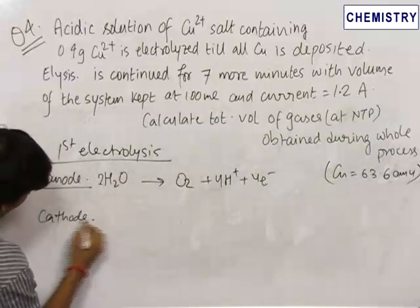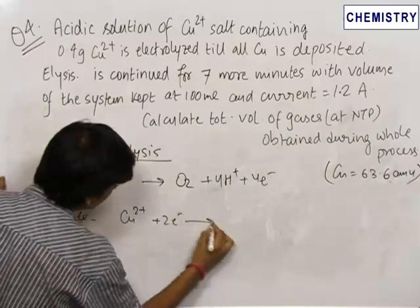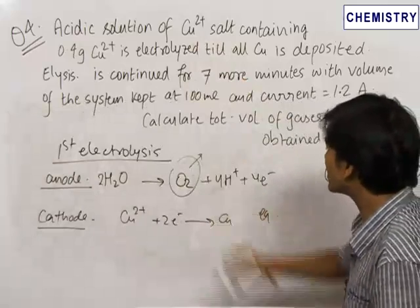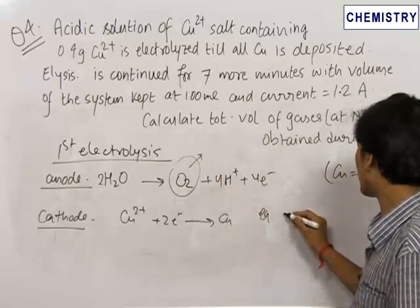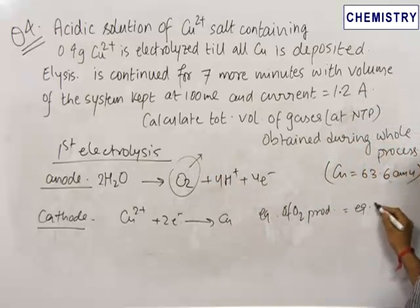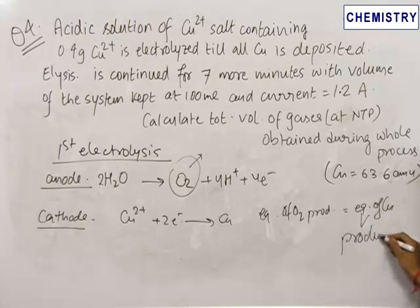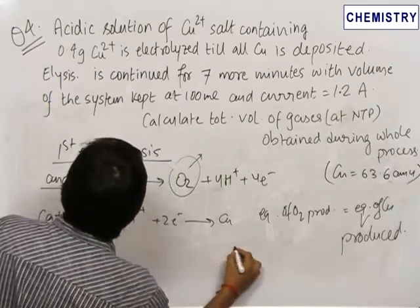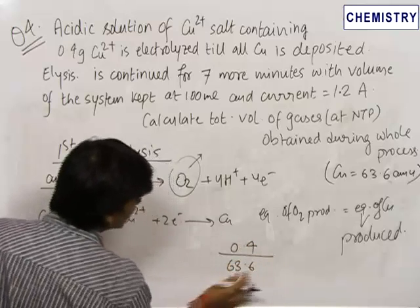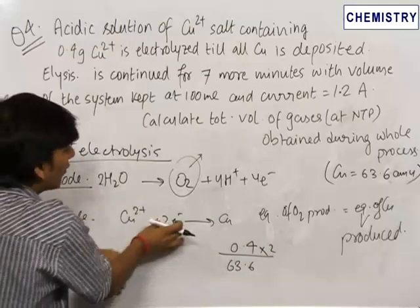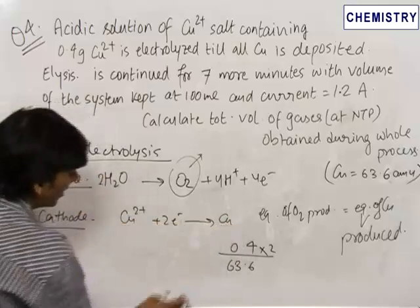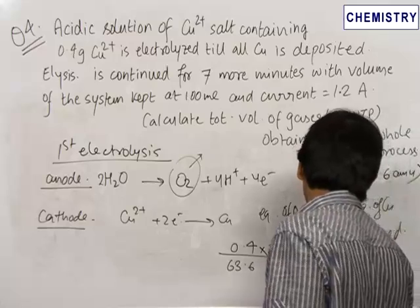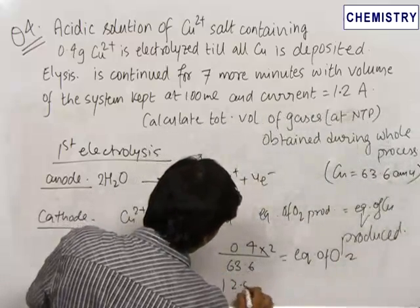For the cathode reaction, reduction of copper takes place: Cu2+ + 2e− → Cu. In the first electrolysis, the only gas produced is oxygen. Therefore, equivalents of O2 produced equals equivalents of copper produced. Equivalents of copper = 0.4/63.6 × 2 (the valency factor, since 2 electrons are accepted per copper ion). This comes out to be 12.58 × 10⁻³ equivalents of O2 produced.